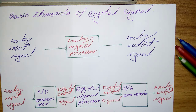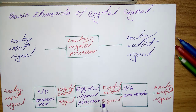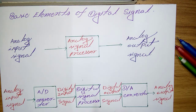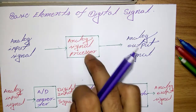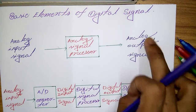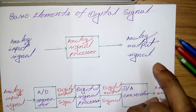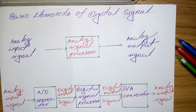Such signals may be processed directly by appropriate analog systems such as filters, frequency analyzers, or frequency multipliers. In that case, we say the signal has been processed directly in its analog form — with an analog input signal going into an analog signal processor and producing an analog output signal.